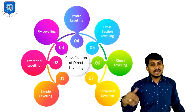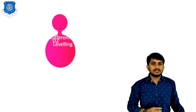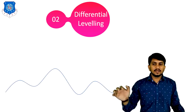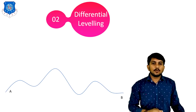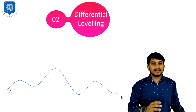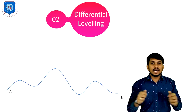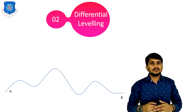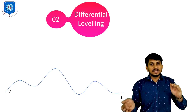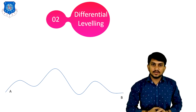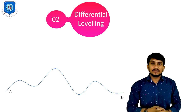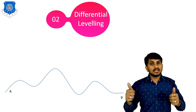Now let us move to the second type of leveling, which is differential leveling. Suppose this is an uneven ground; there are two points A and B and our goal is to find out the level difference between them. Here these two points are far away from each other — like 1 kilometer or 10 kilometers. The distance is too long and the level difference between the points is also large. In this type of condition, differential leveling is used, where only one setup cannot fulfill the requirement.